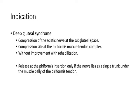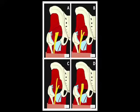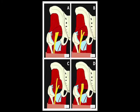Surgical release is indicated after failure of conservative therapy. Release of the tendinous portion of the piriformis at its insertion on the greater trochanter is indicated when the sciatic nerve emerges under the muscle belly of the piriformis. Only when the sciatic emerges as a single trunk under the muscle belly of the piriformis is release at the tendinous portion indicated.